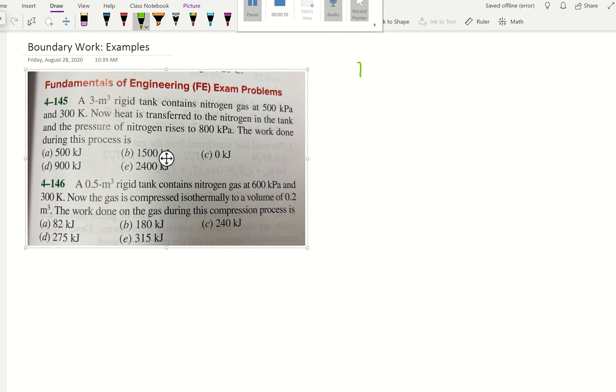If it's boundary work, WB, that's going to be equal to 0 if it is constant volume. And the boundary work is going to be equal to P times V2 minus V1 if it is a constant pressure.